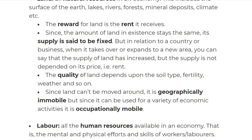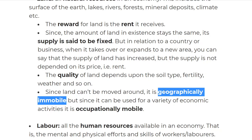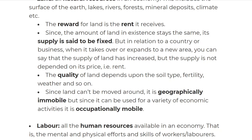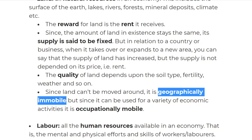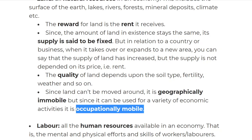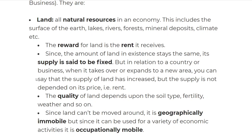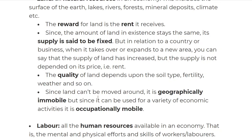In economics, we look at mobility when producing something. Mobility is the ease of changing a factor's use or purpose. Land is geographically immobile — meaning it cannot move around from one location to another. However, its use can change, and therefore we say land is occupationally mobile. If a factor of production has only one use, then it is occupationally immobile. So for land: reward is rent, supply is fixed, quality depends on its soil and environment, and it is geographically immobile but occupationally mobile.